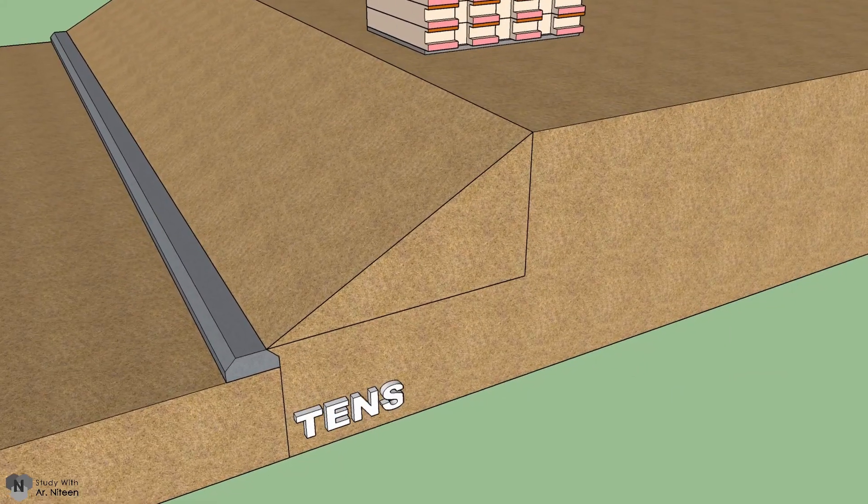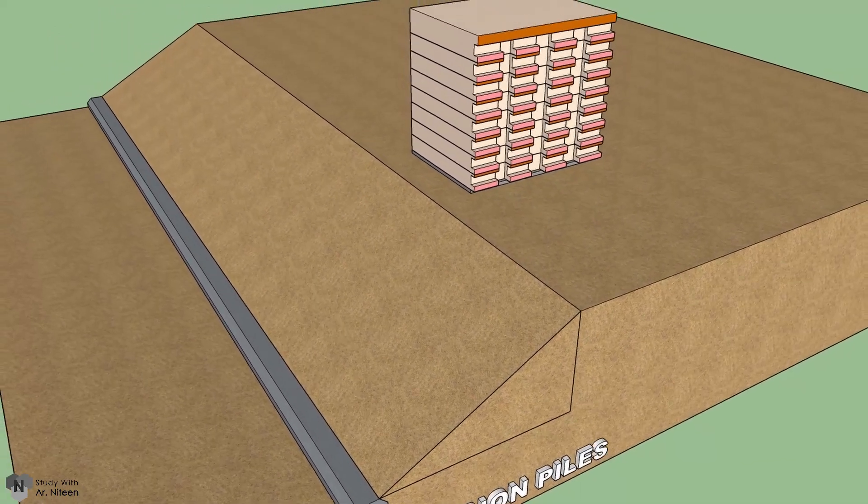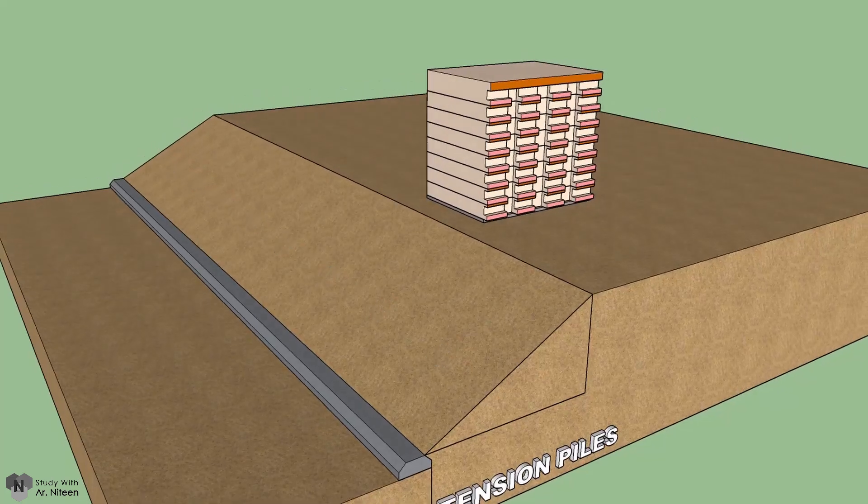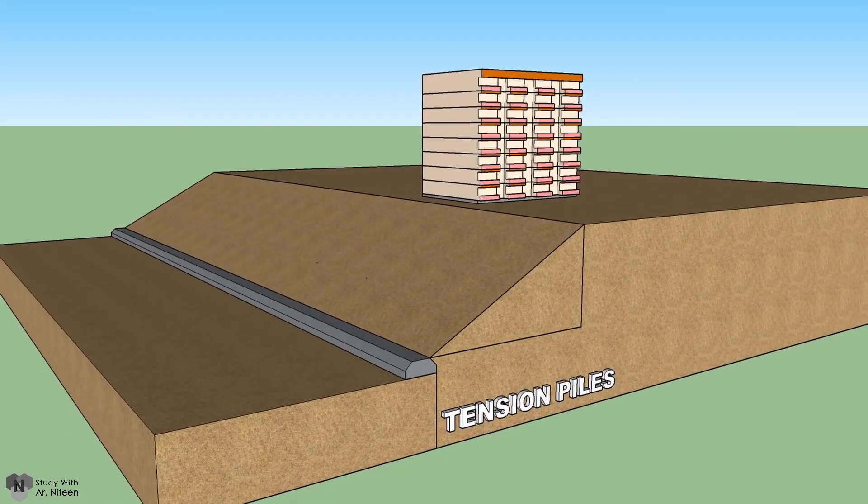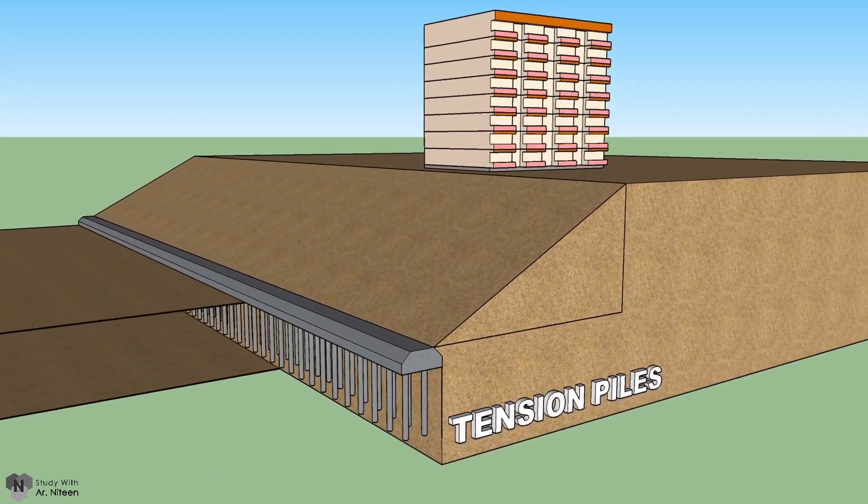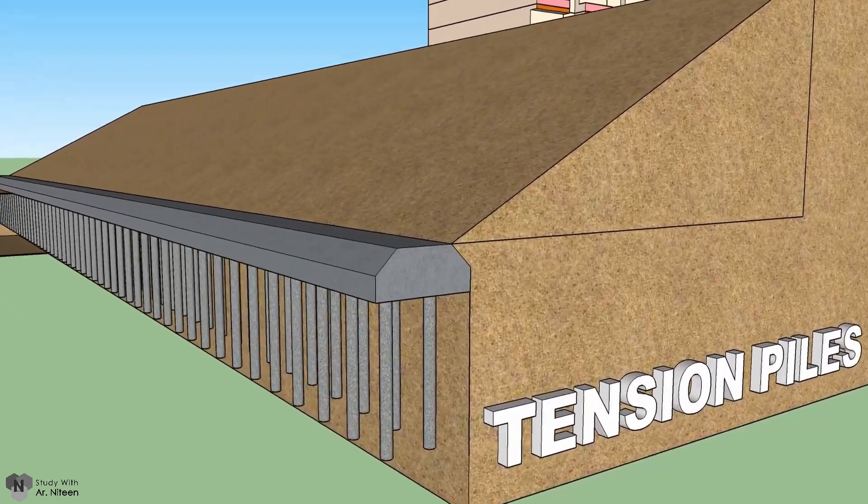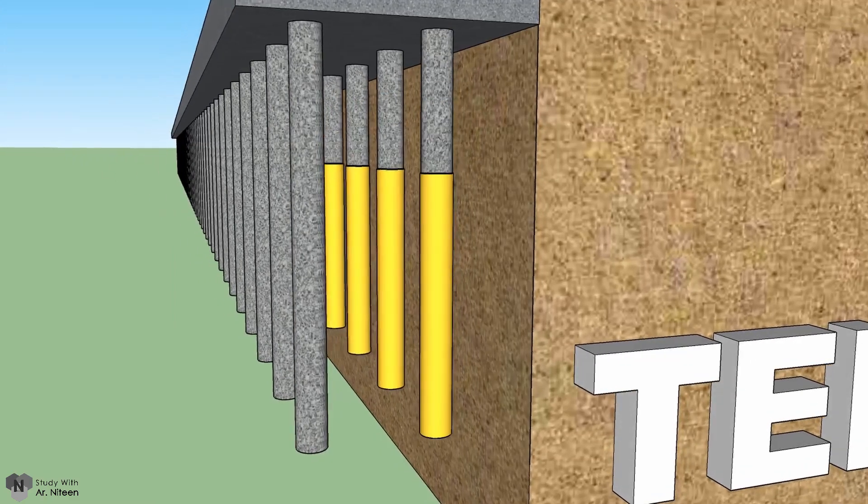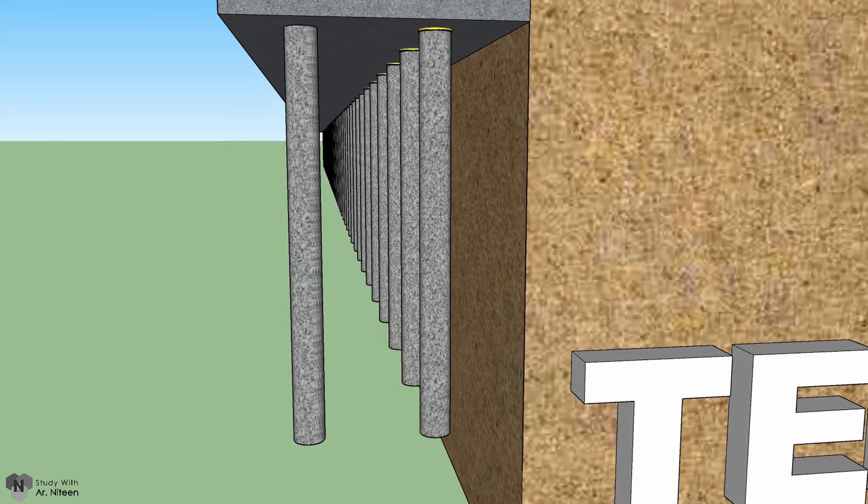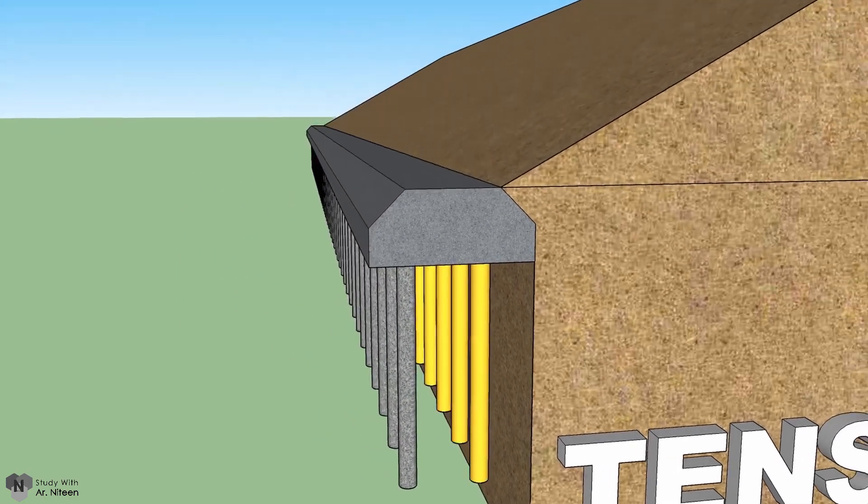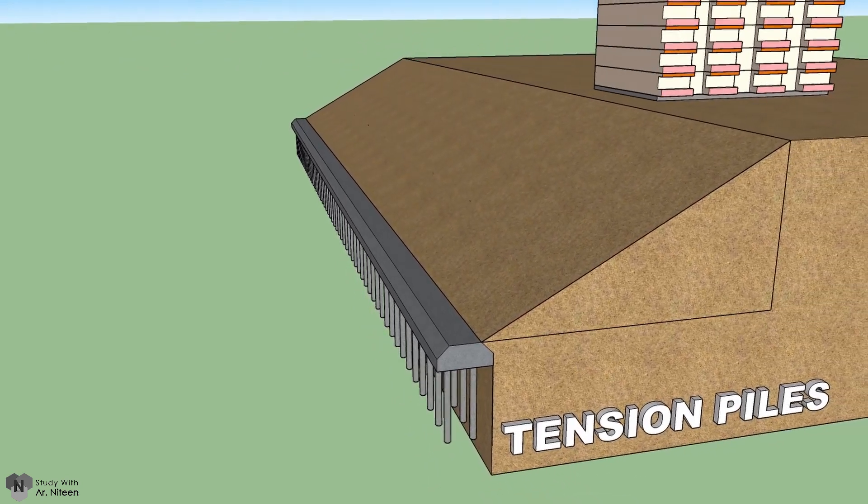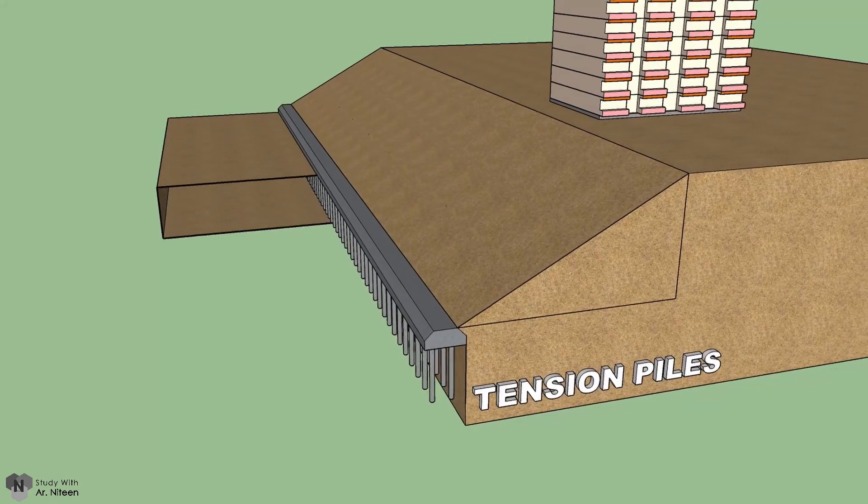Tension piles, also known as uplift piles, are a type of pile foundation used to resist uplift forces that might otherwise cause it to be extracted from the ground. Uplift forces can develop as a result of hydrostatic pressure, seismic activity, or overturning moments. Tension piles resist uplift forces through the action of friction along their length.